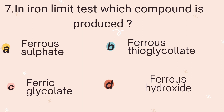Seventh question: Which compound is produced in the limit test of iron when the reagent is added? Option A is ferrous sulfide, Option B is ferrous thioglycolate, Option C is ferric glycolate, and Option D is ferrous hydroxide. The correct answer is ferrous thioglycolate.